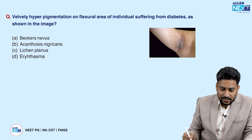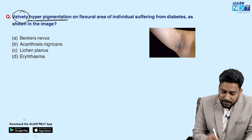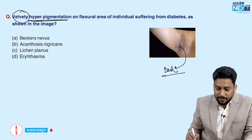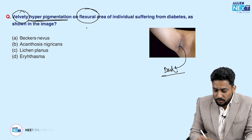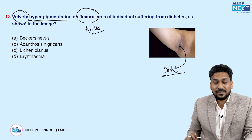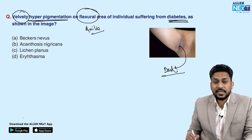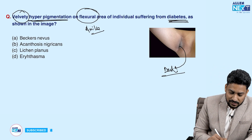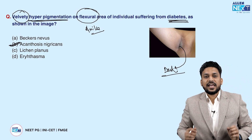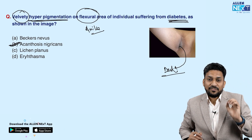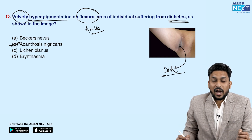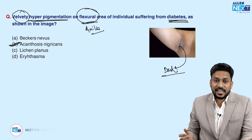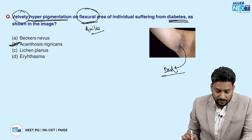Coming to the next question, they are describing velvety hyperpigmentation — that is darkening — over flexors. As you can see, it is present over the axilla, that is flexural areas. The patient is also suffering from diabetes, and diabetes is one predisposing factor for acanthosis nigricans. Acanthosis nigricans generally presents as velvety, dirty-looking, dark hyperpigmented lesions over folds — that is flexural areas like neck folds, axilla, or groin. So this is a case of acanthosis nigricans.